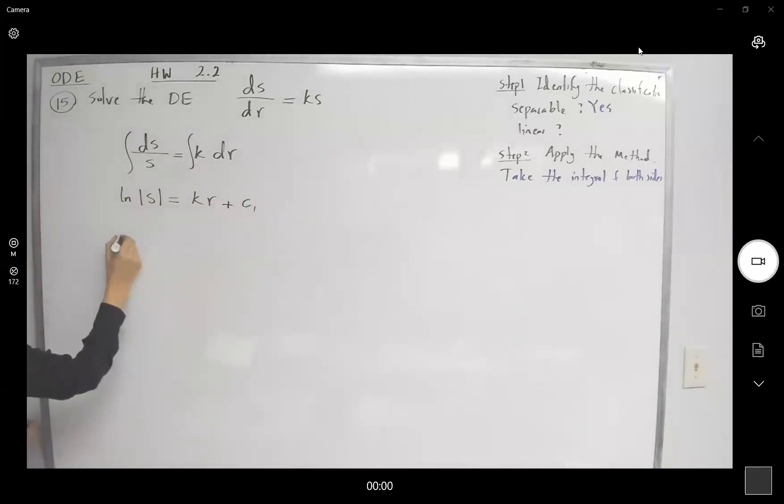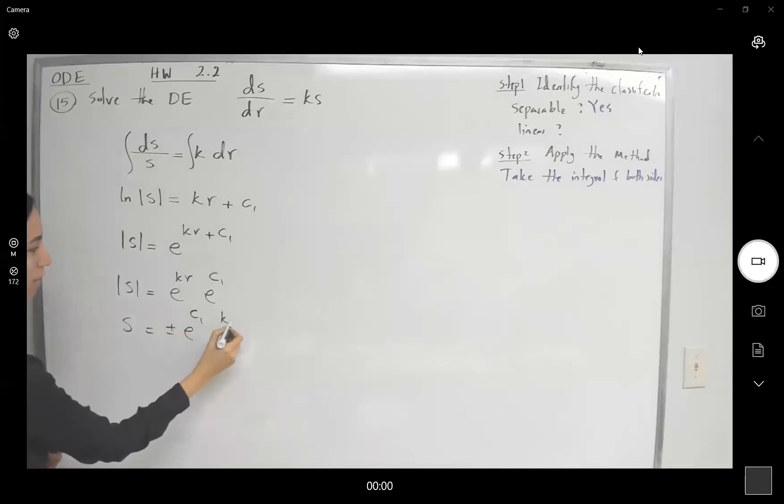Here your s, absolute value of s is equal to e to the power kr plus c sub 1. So absolute value of s can be written as e to k times r times e to power c sub 1. And s is plus minus e to c sub 1 times e to k r.